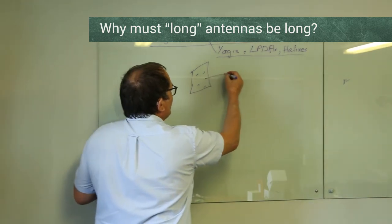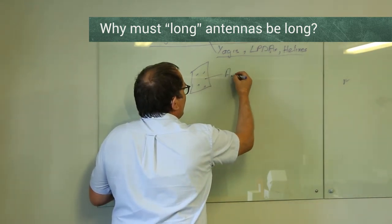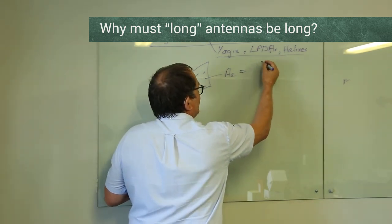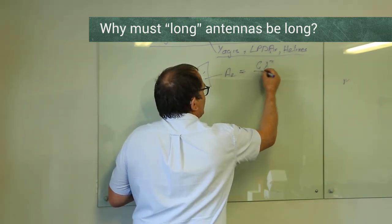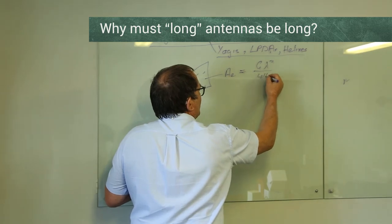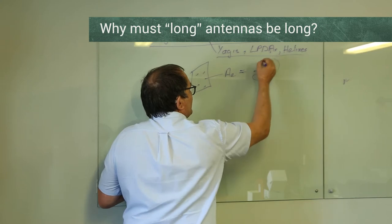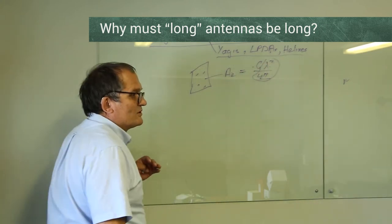There's a direct relationship between what's known as the effective aperture and the gain of an antenna. Effective aperture equals G lambda squared over 4π. Now, that's wavelength, that's just numbers. So you can see that aperture is proportional to gain.